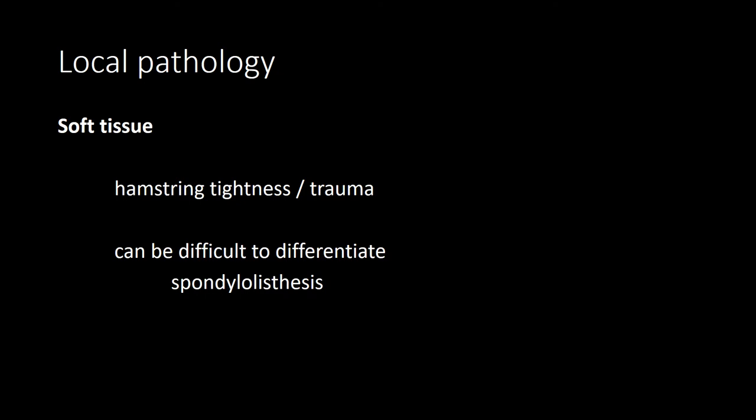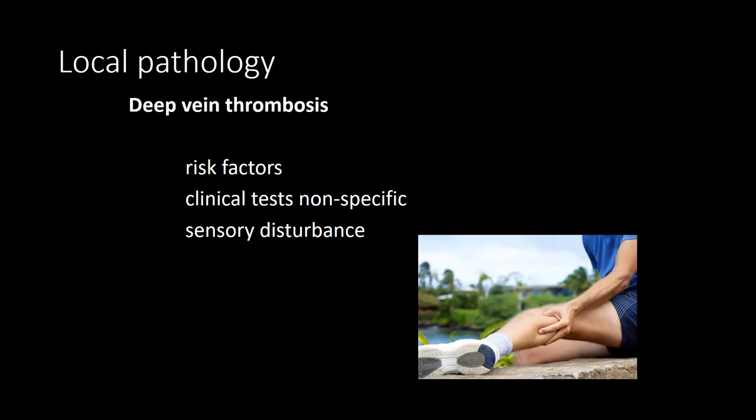Hamstring tightness from trauma can mimic sciatic-type symptoms and can be difficult to differentiate from the tightness experienced with spondylolisthesis. Deep vein thrombosis can result in leg pain; there may be associated swelling, but not always, with clinical tests being non-specific. One needs to remember risk factors of hypercoagulable states and long travel. Typically there is no sensory disturbance in DVT, which helps differentiate it from sciatica.